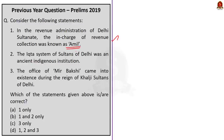The second statement: the Iqta system of Sultans of Delhi was an ancient indigenous institution. It is true that the Iqta system existed during the period of Sultans, but it was not an ancient indigenous system. Rather, Iqta is an Arabic word and this institution had been enforced in the early Islamic world as a form of reward for services to the state. It was used in the Caliphate administration as a way of financing operations and paying civil and military offices. Thus, this statement is incorrect.